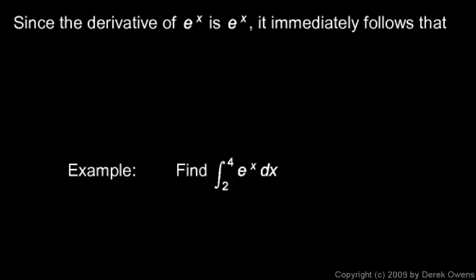Now one more point to make right here. Since the derivative of e to the x is e to the x, it immediately follows that the integral of e to the x is e to the x. And of course we need to put in the plus c, the constant of integration.